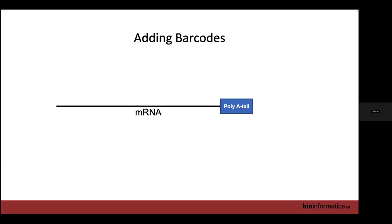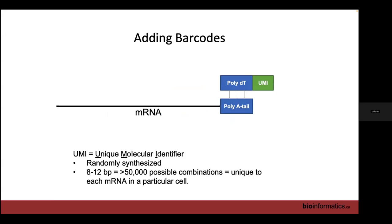Here's our mRNA molecule. How are we actually going to capture it? We hybridize it to a poly-dT sequence that has a UMI attached to it. UMI stands for unique molecular identifier. These are randomly synthesized sequences between 8 and 12 base pairs long, depending on which technology and version you're using, giving us more than 50,000 possible combinations. In theory, we have a unique barcode for every single mRNA molecule we're going to capture.